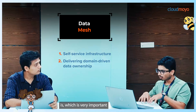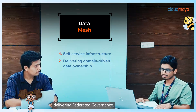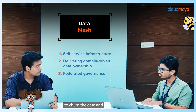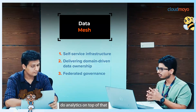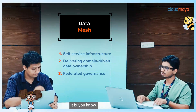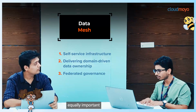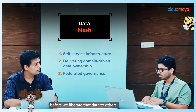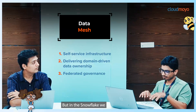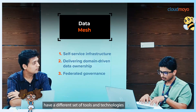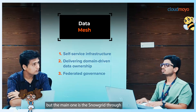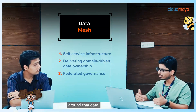The third principle, which is very important, is delivering federated governance. We have a lot of tools and technologies to turn the data and run analytics on top of that, but putting governance boundaries and policies around the data is equally important before we share that data with others. In Snowflake, the main tool for this is Snowgrid, through which we can put policies and boundaries around that data.